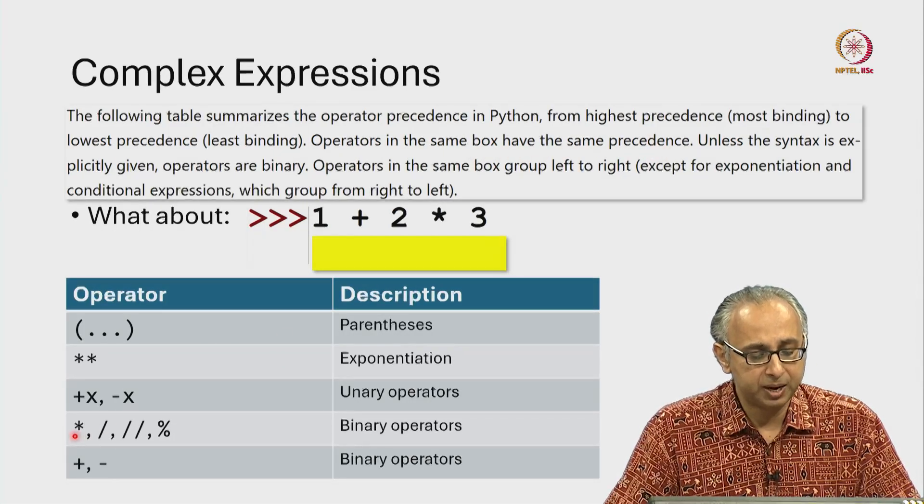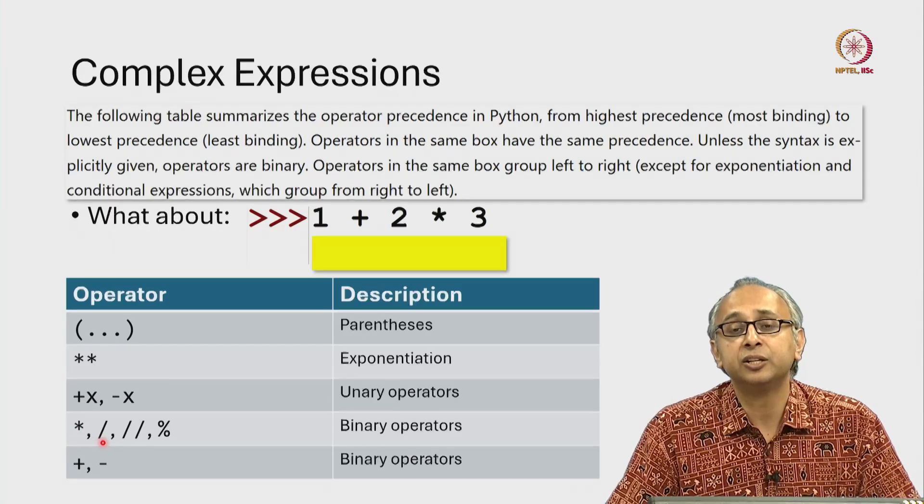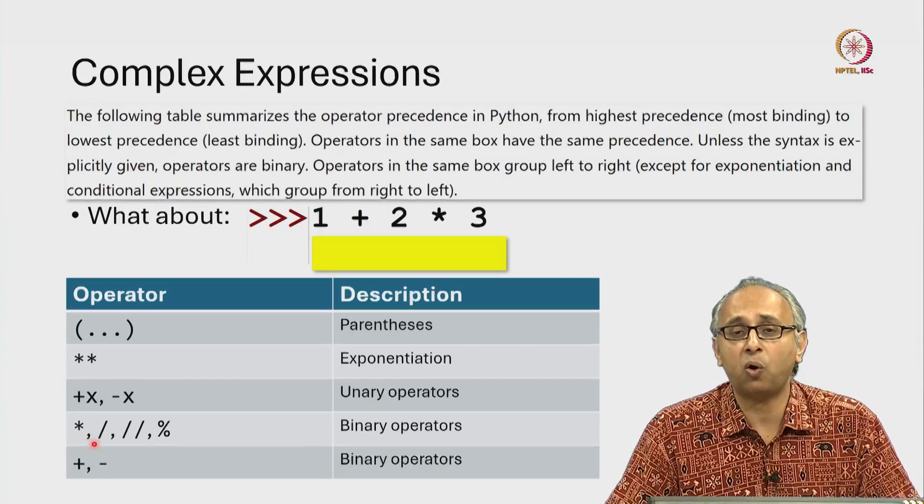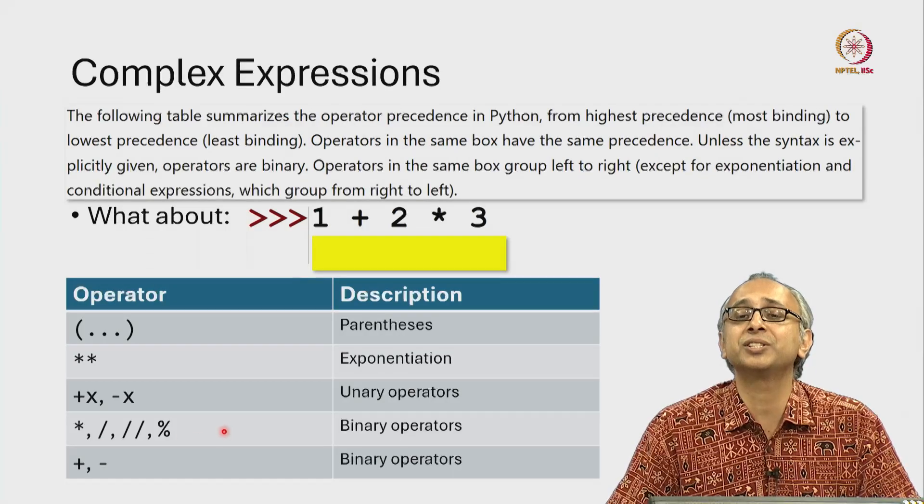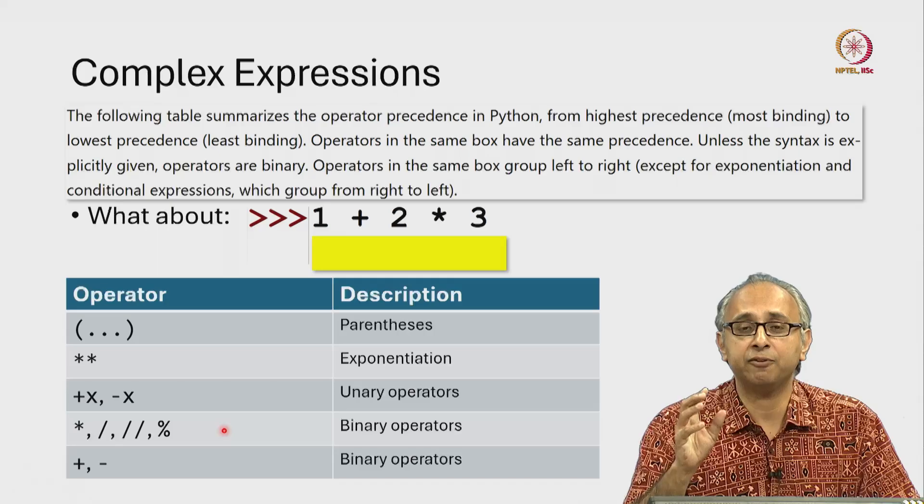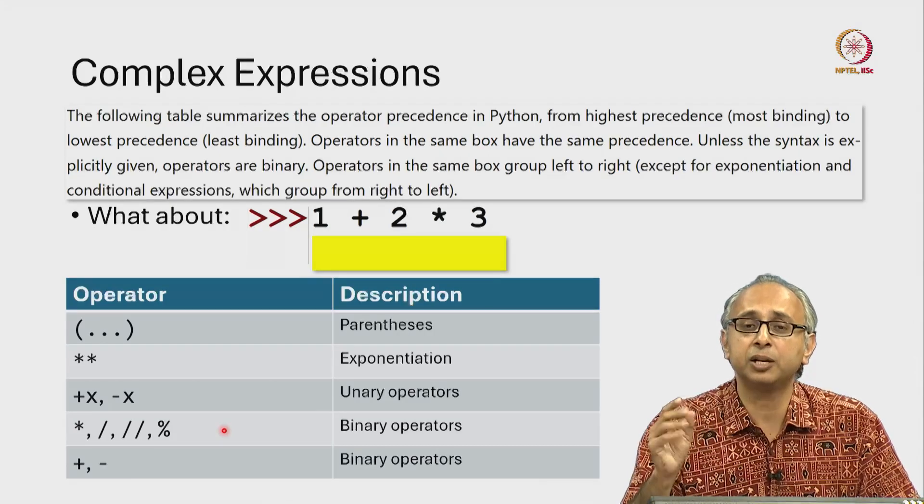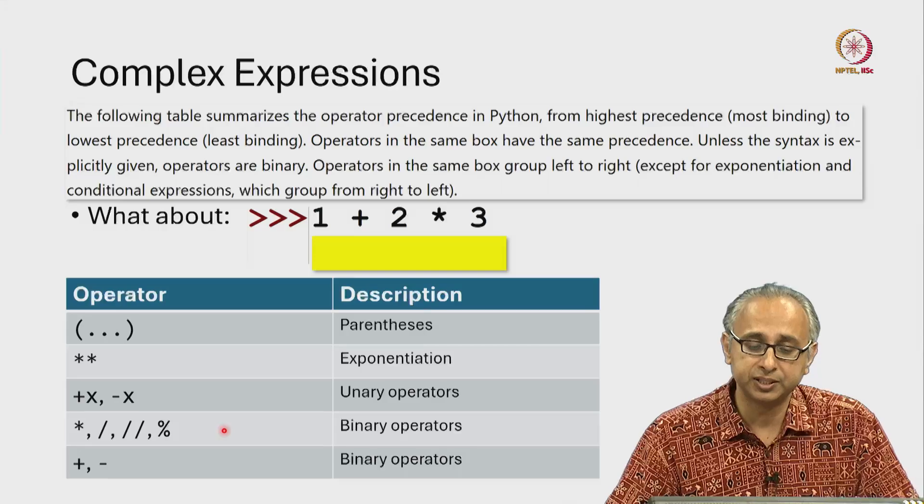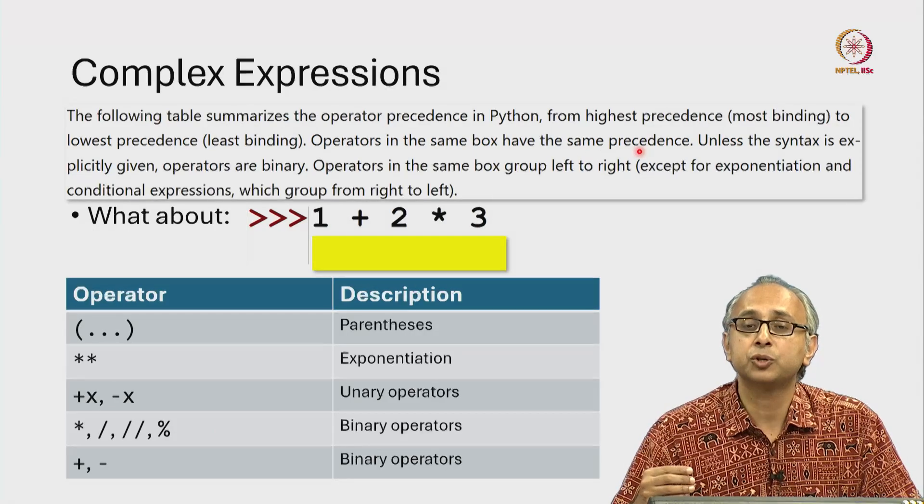So as an example, multiplication and true division and floor division and remainder are all in the same box in this table which means that if you have an expression that has multiple of these then there is no order of precedence, they all have the same precedence. So then what happens?